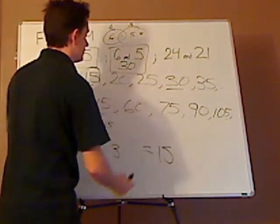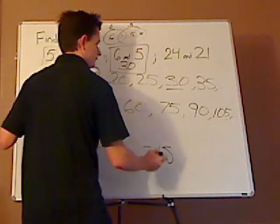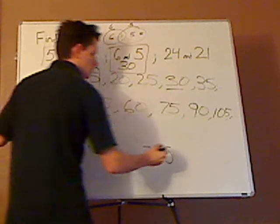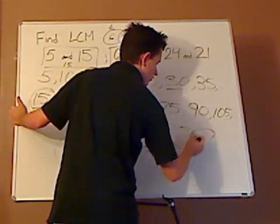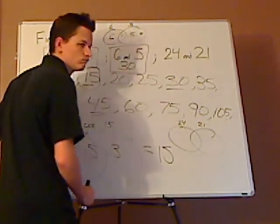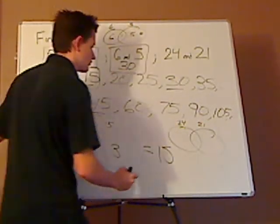Now, let's find this using the short way. If you did the long way, you would have to list these out. Well, let's do the short way. What's the GCF of 24 and 21? Yep, it's 3.